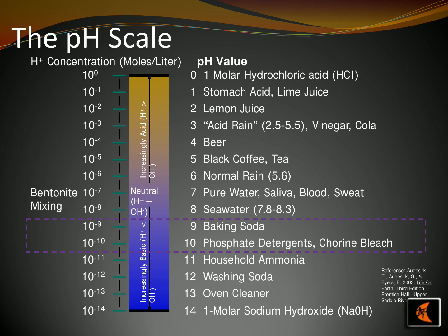Bentonite is a material composed of platelets that can absorb large quantities of water and expand up to 20 times its volume. Special stresses are given to ensure good mixing with other materials, to yield the desired properties.